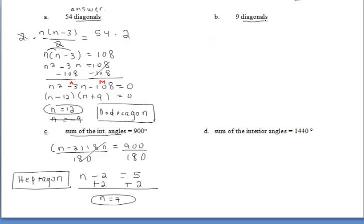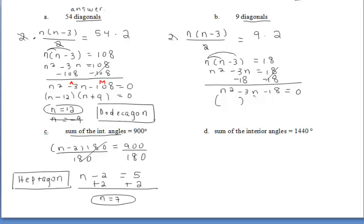For part b, we're given diagonals and we know that we can draw 9 diagonals in this shape. So we can use our formula n times n minus 3 divided by 2 and set that equal to 9. Solving similarly to what we did in the first problem, we can multiply both sides of the equation by 2, distribute our n, and then set our equation equal to 0.